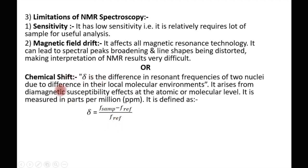Chemical shift arises due to diamagnetic susceptibility effects at the atomic and molecular level. Susceptibility is defined by the letter χ, defined as χ = M/H, that is, the ratio of magnetization to magnetic field intensity. This diamagnetic susceptibility is the main factor due to which the chemical shift arises.